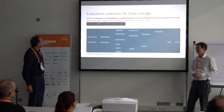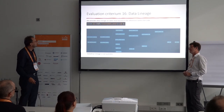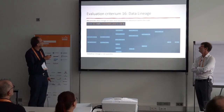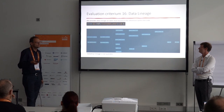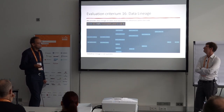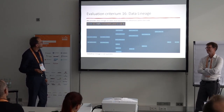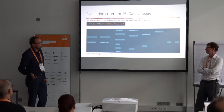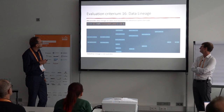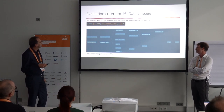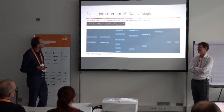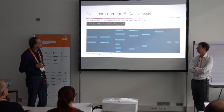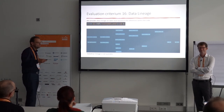Criterion 16 — data lineage. Of course dbt has data lineage. When you provide a source model in your macro as a parameter, it becomes part of the data lineage. Or, going further downstream to the business vault, you use the ref() function to define what each model depends on. dbt uses this to provide orchestration and build the DAG.